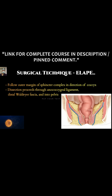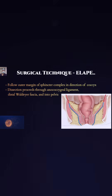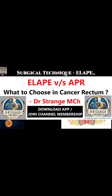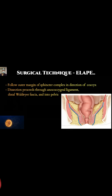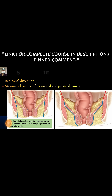When we are dissecting from below, we follow the margin of the sphincter complex — that is the external sphincter complex — in the direction of the coccyx posteriorly. The dissection then proceeds through the anococcygeal ligament and distal Waldeyer's fascia into the pelvis.